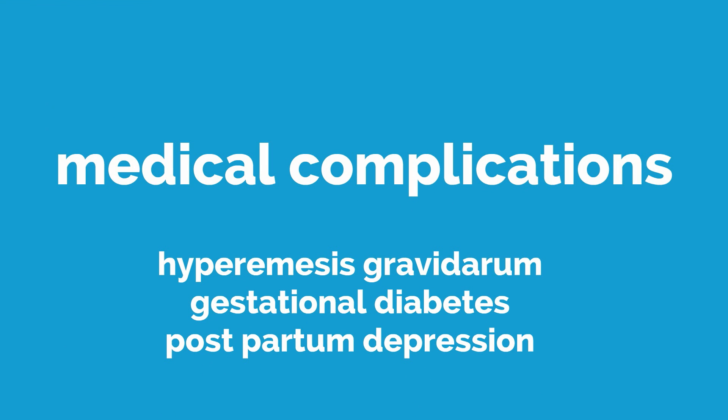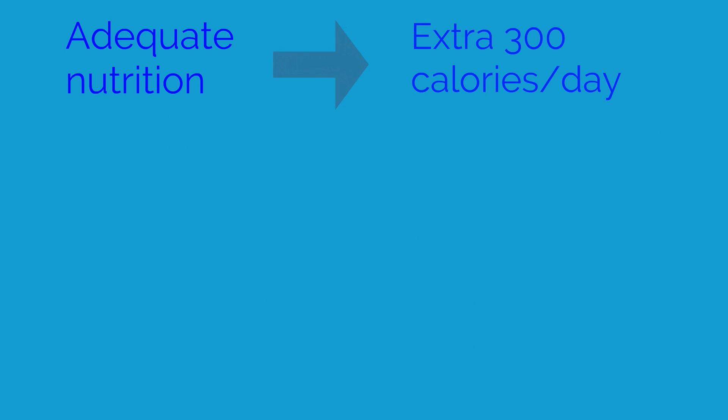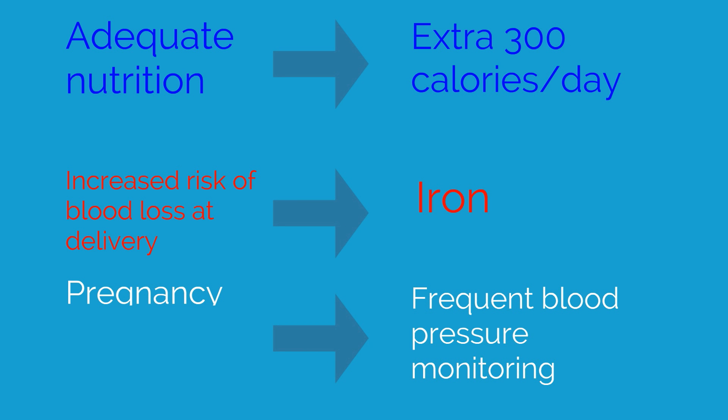Many medical complications are more common in multifetal gestations. These include hyperemesis gravidarum, gestational diabetes mellitus, and postpartum depression. Additional maternal concerns that need to be addressed are adequate nutrition. Twin pregnancies require an extra 300 calories per day. There is also an increased risk of blood loss at delivery, so pregnant women with twins should take iron to try to prevent anemia. Women with twins are also at increased risk of developing pregnancy-induced hypertension, therefore frequent blood pressure monitoring should be performed.